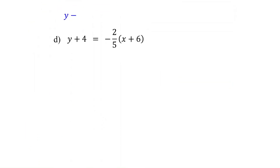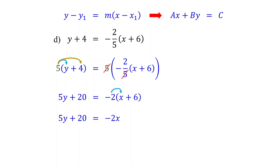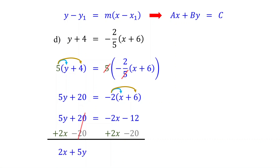Now it is your turn — pause the video and give it a try. First, eliminate the fraction by multiplying both sides of the equation by 5. On the left, distribute the 5. On the right, the 5s cancel, leaving negative 2 times X plus 6. Next, distribute the negative 2. Then add 2X to both sides and subtract 20 from both sides. On the left, these cancel, leaving 2X plus 5Y. On the right, these cancel, leaving negative 12 minus 20, which equals negative 32. The coefficient of X is already positive, so this is your equation in standard form.